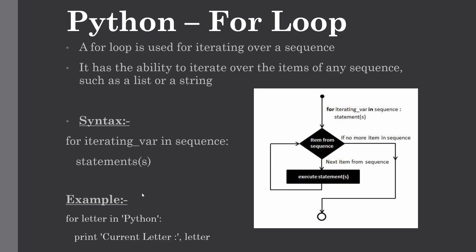This is the basic syntax and example. Here we have used a for loop on a string data type. Whenever we execute this program, it assigns every letter in the string one by one to the iterator and the print statement executes.